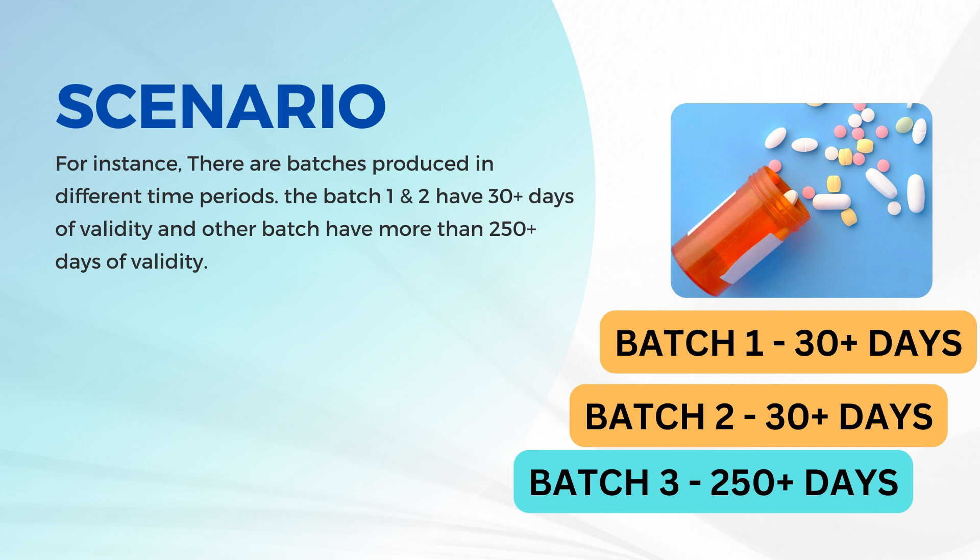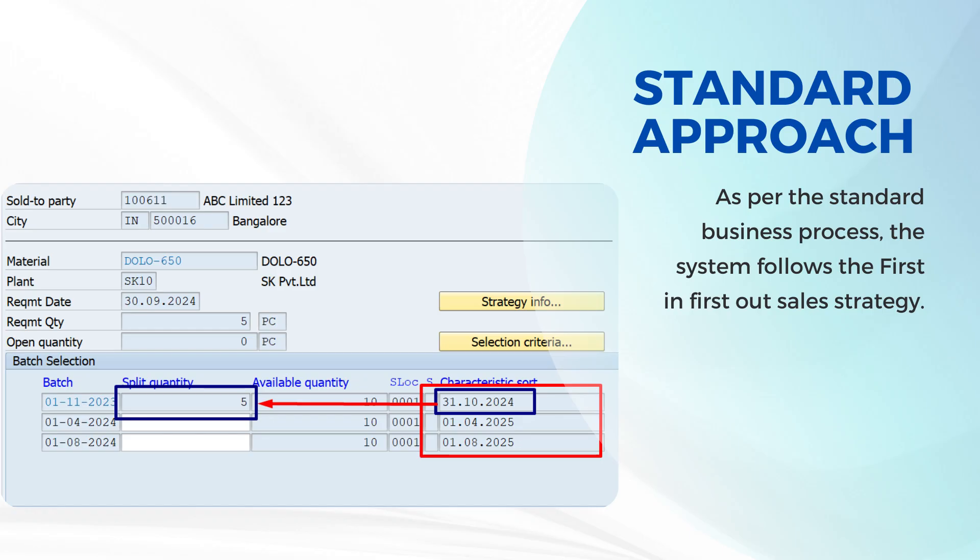There are a couple of batches produced in different time periods. A few of them have 30 plus days of validity and the other batches have more than 250 days of validity. As per the business strategy, the batch that has less validity is sold out first — in short, first in first out basis.